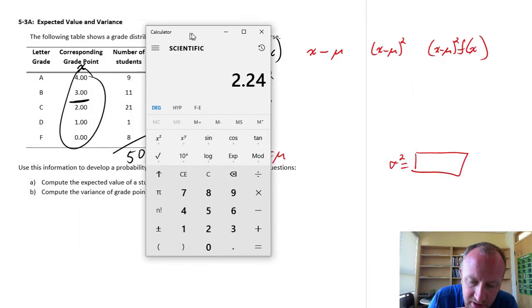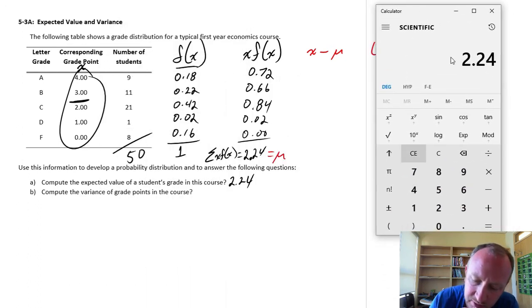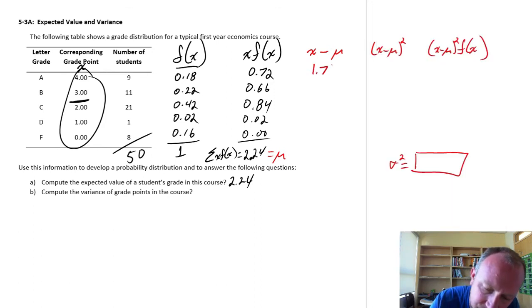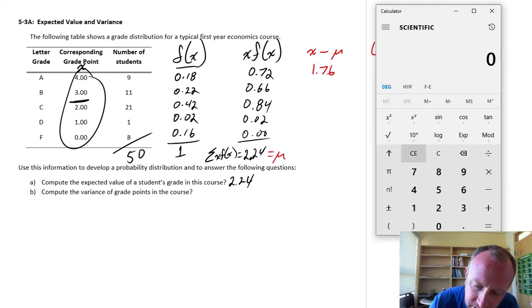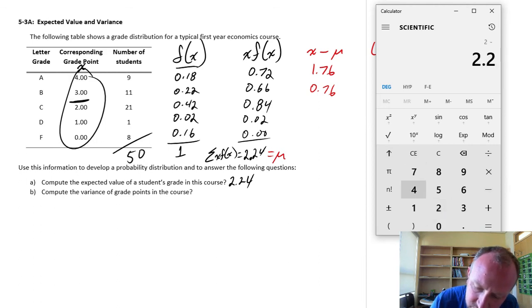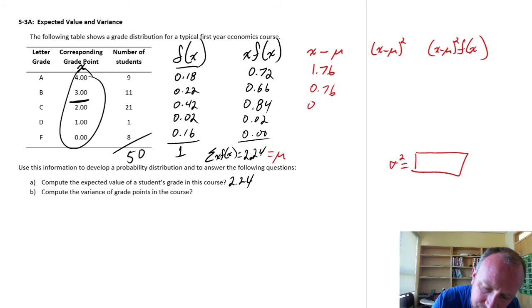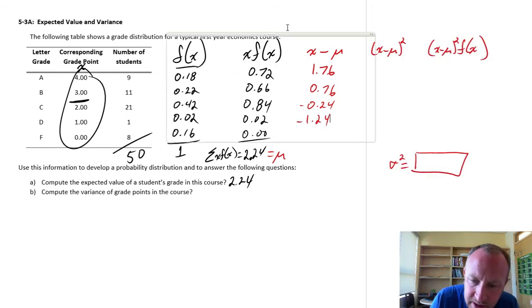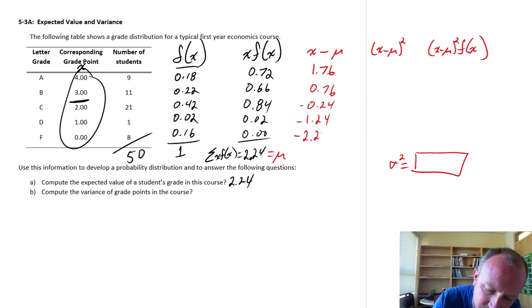So let's go through. x are individual values minus the mean. So this is 4 minus 2.24, so that's 1.76. And the next one is 3 minus 2.24, 0.76. Moving on, 2 minus 2.24, negative 0.24. We see a pattern emerging here, don't we? Next one is 1 minus 2.24, negative 1.24, and 0 minus 2.24, minus 2.24. Good.